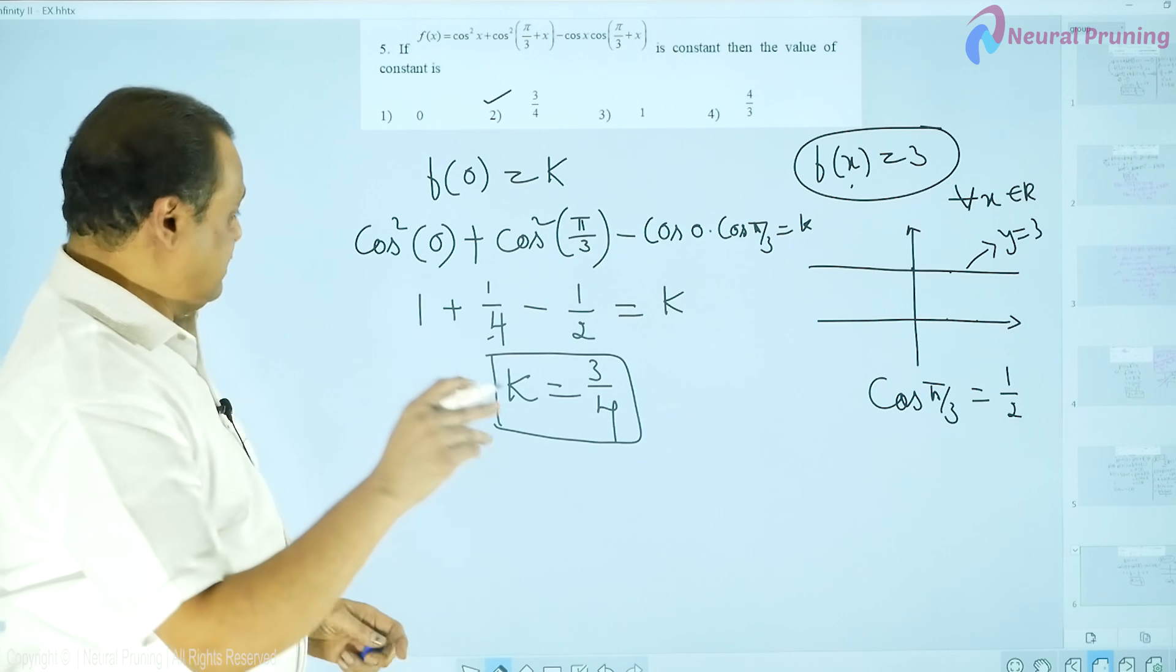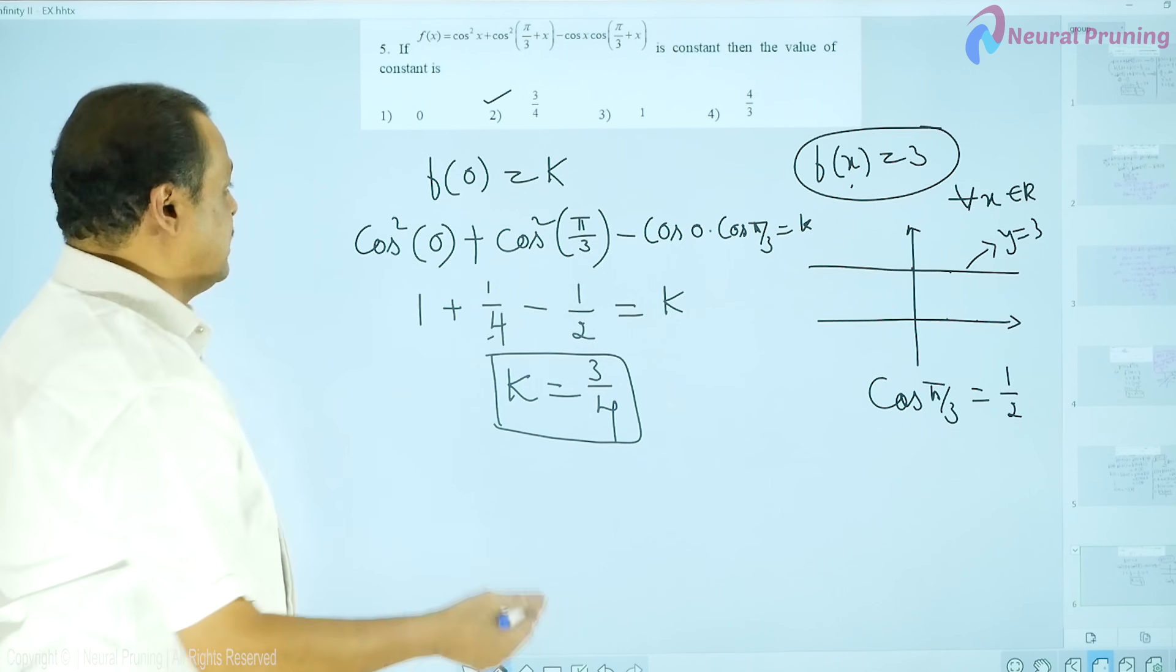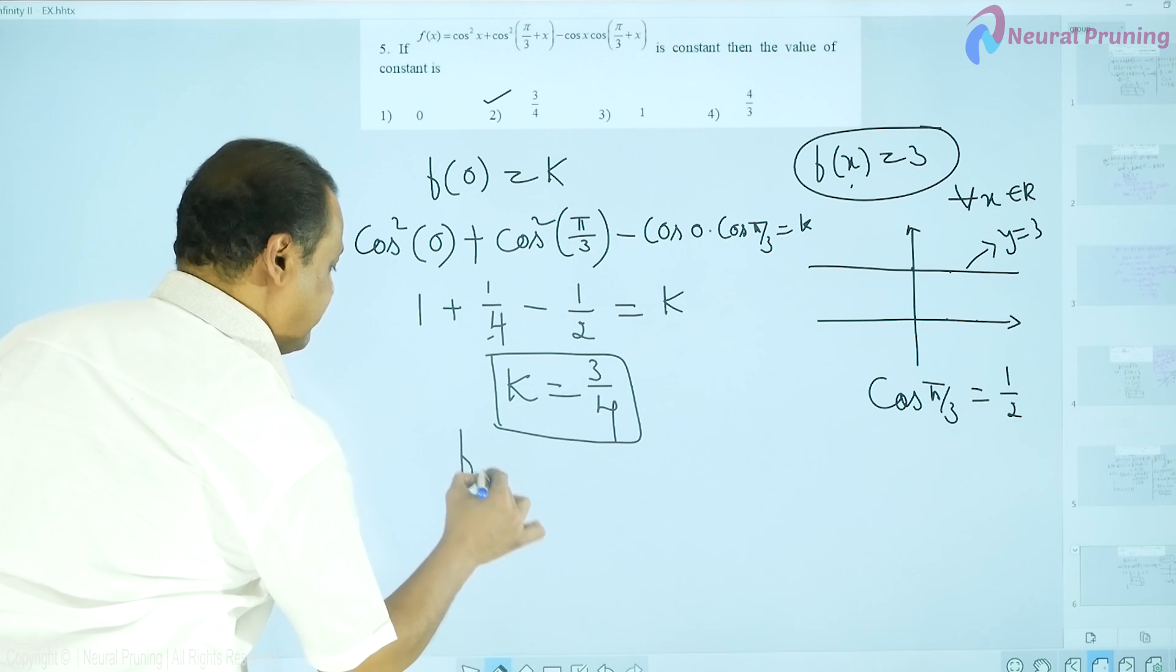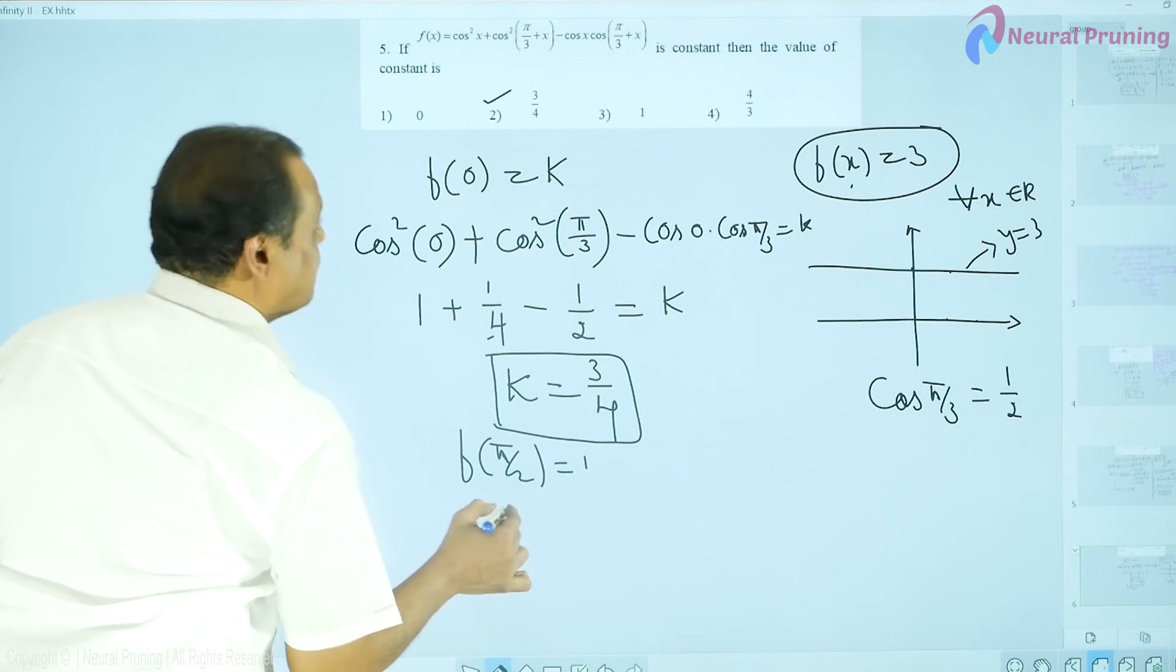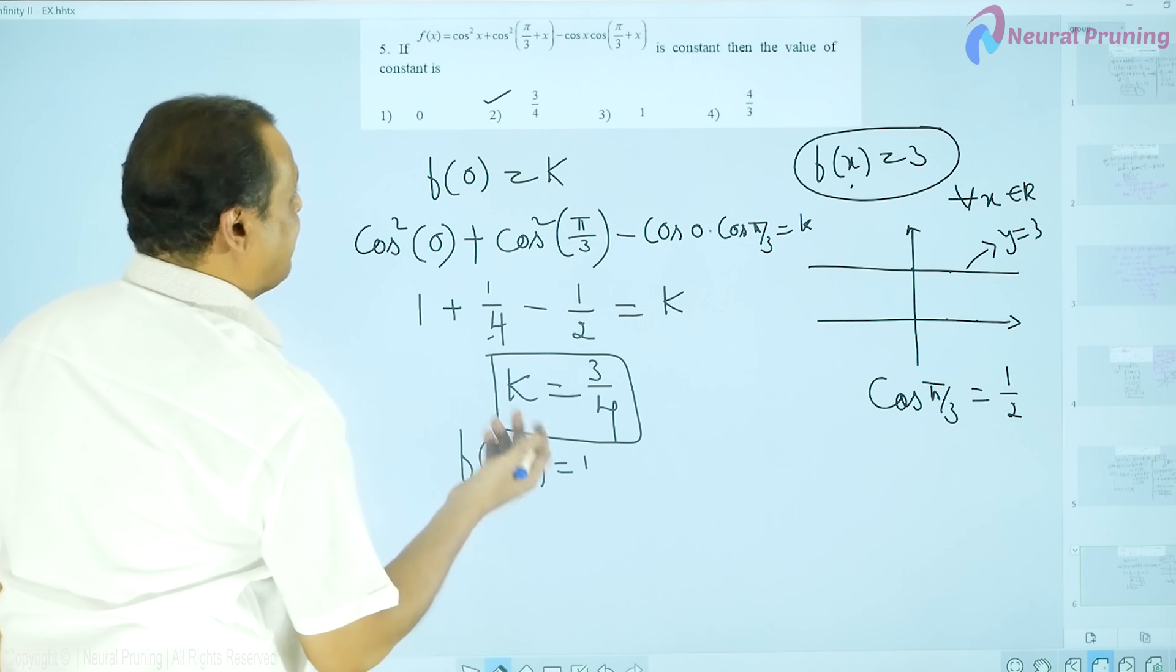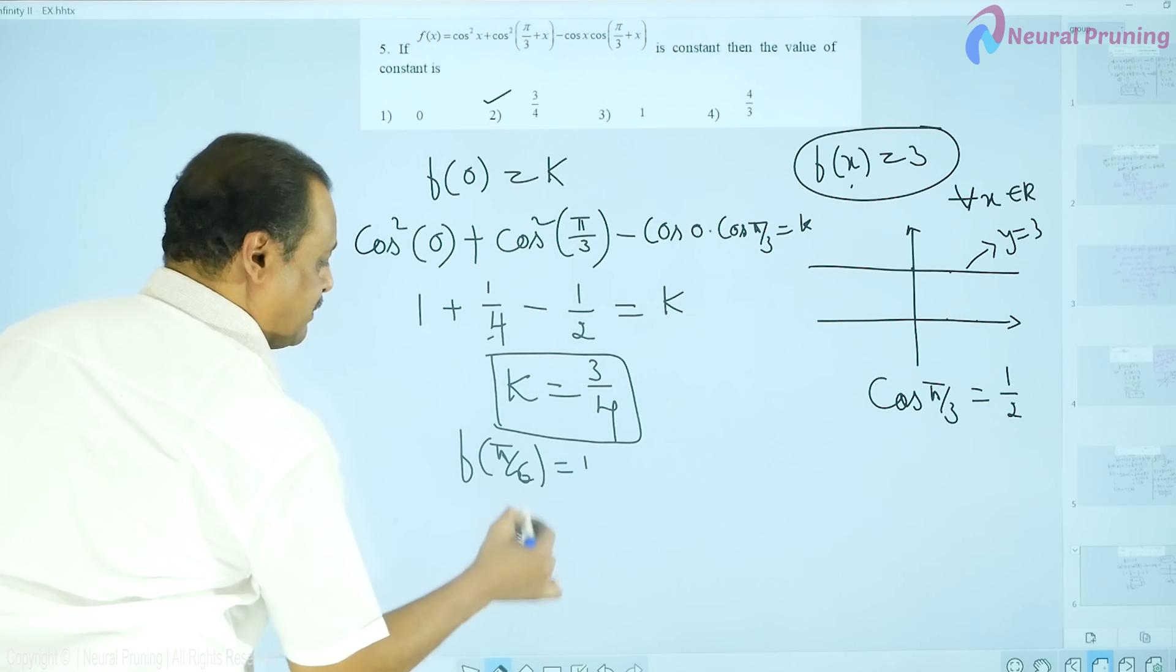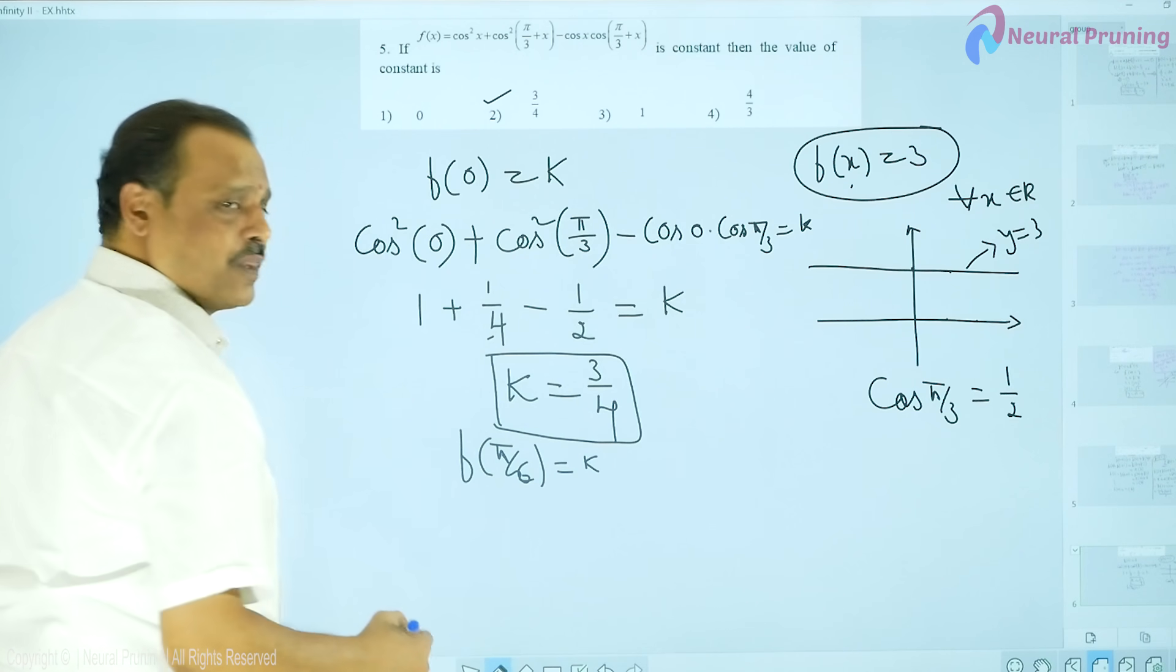So, here, see for example, if I want to verify with some other value. If I want to say that f of pi by 2 is also equal to k. Or f of pi by 6, let me think. Pi by 6, it is also equal to k.